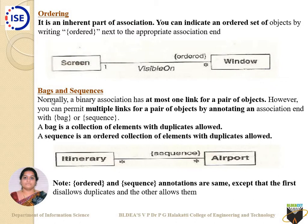One more type of association is bags and sequences. There is a small difference between them. A bag is a collection of different objects of the same class — a collection of elements with duplicates allowed. A sequence is an ordered collection of elements with duplicates allowed. Keep in mind: if I use 'ordered' as a term, it does not allow duplicates, whereas 'sequence' allows duplicates. That is the one difference between ordered and sequence.